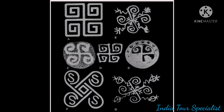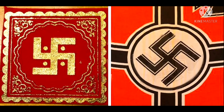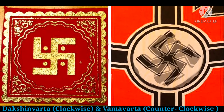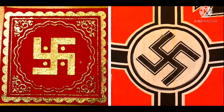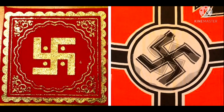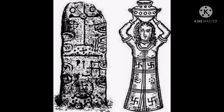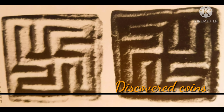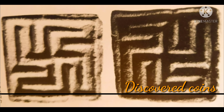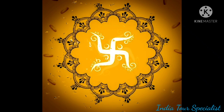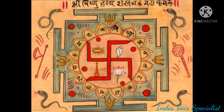Generally, we can find two types of Swastikas. One is Dakshinavarta, that is clockwise, and the other is Vamavarta, that is counter-clockwise. The earliest evidence can be found from coins discovered from the Indus Valley Civilization era. However, in Hinduism, only the clockwise Swastika is used in worship and in religious practices.